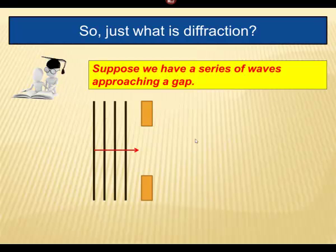Now, let's look at a scenario. We've got a scenario here where a series of waves are approaching a gap. Here's a gap here and here's a series of waves of constant wavelength. Now, what happens? Well, think about this.